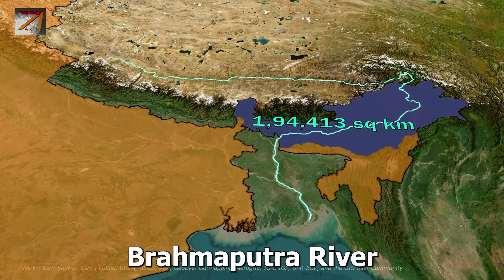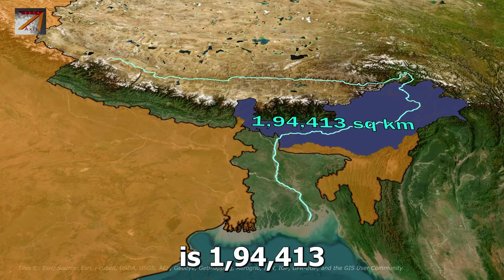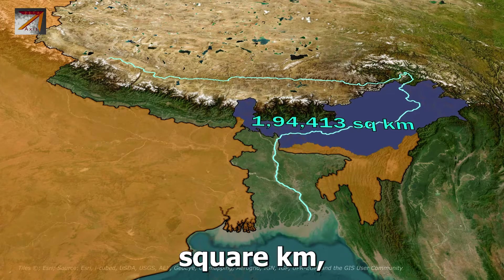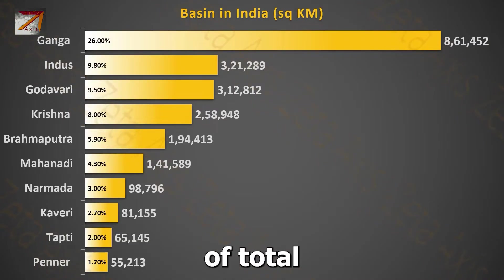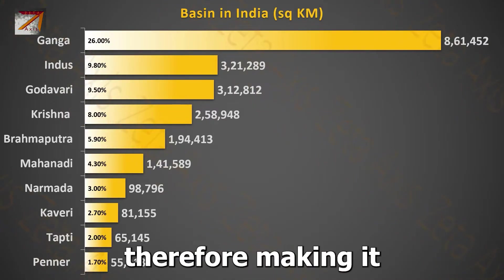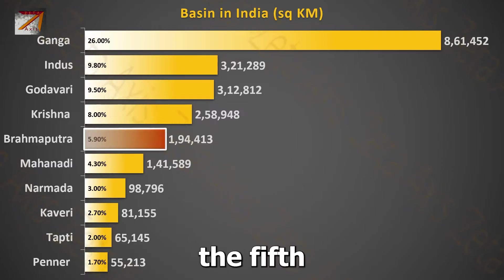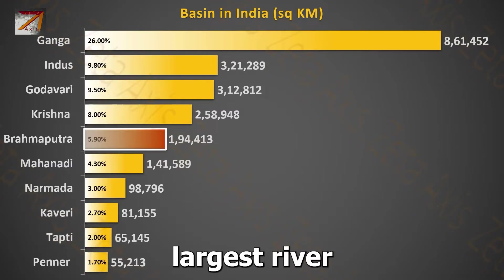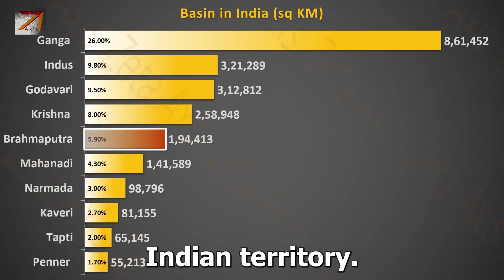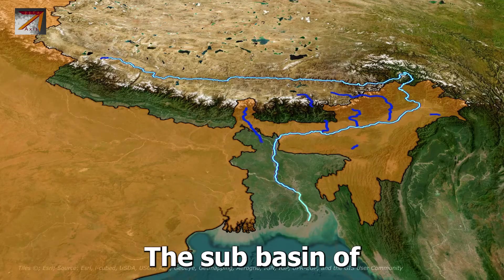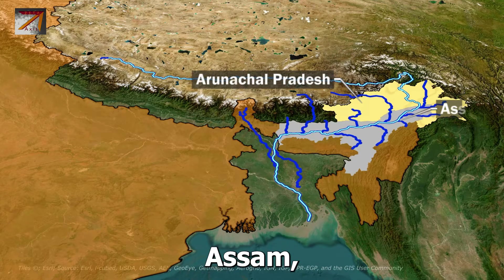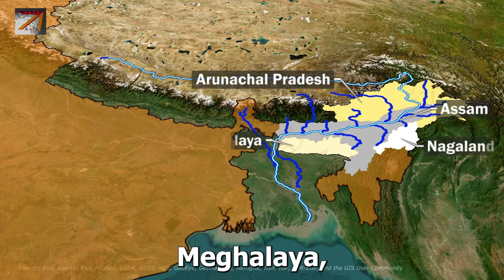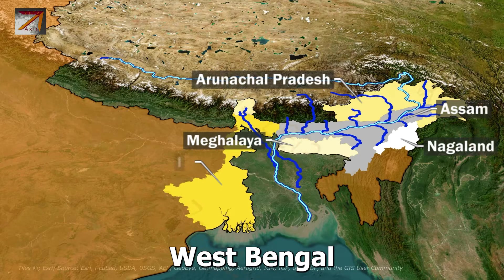However, the Brahmaputra River basin within India is 194,413 km², which is approximately 4.9% of the total geographical area of India, therefore making it the 5th largest river basin within Indian territory. The sub-basin of Brahmaputra lies in the states of Arunachal Pradesh, Assam, Nagaland, Meghalaya, West Bengal, and Sikkim.